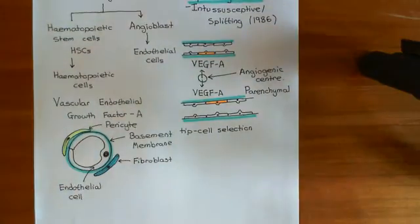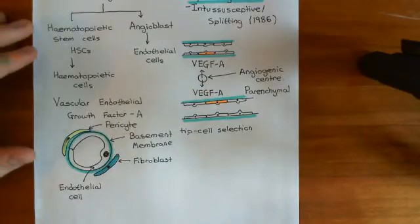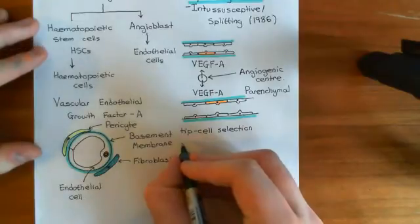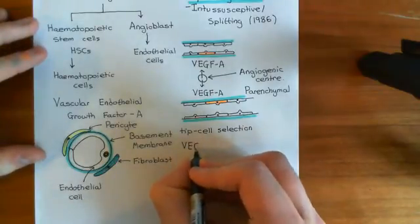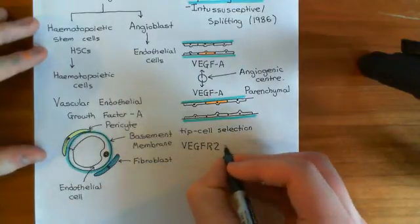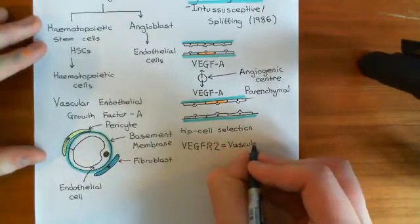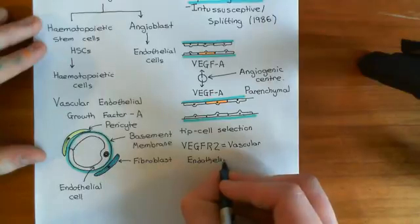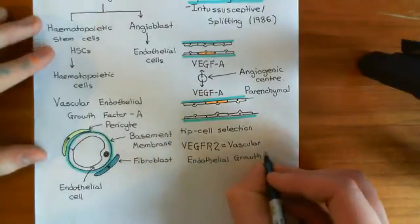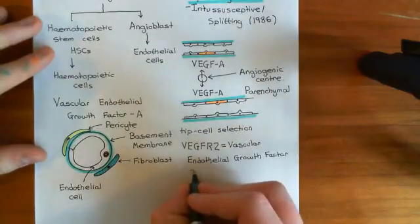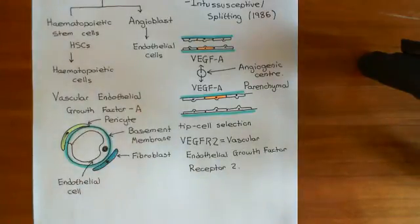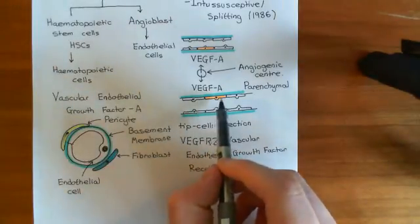How does vascular endothelial growth factor A affect these endothelial cells? Basically, the endothelial cells have a receptor that binds to vascular endothelial growth factor A, and this receptor is known as the vascular endothelial growth factor receptor — VEGFR — and it's the type 2 receptor. So VEGFR2 is the receptor that responds best to vascular endothelial growth factor A. On the surface of these endothelial cells you have the vascular endothelial growth factor receptor 2, and what this is going to cause is these cells, which get the biggest dose, to become tip cells.